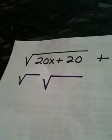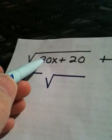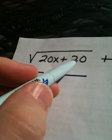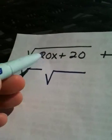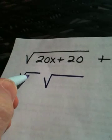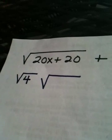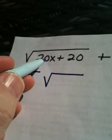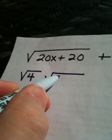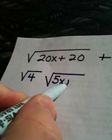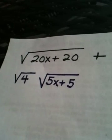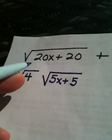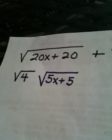This is a little tricky, but catch it. 20x and 20 have a perfect square in common, and that perfect square is 4. When I factor out a 4, I'm left with a 5x plus 5. You see what I did? 4 times 5x is 20x. 4 times 5 is 20.